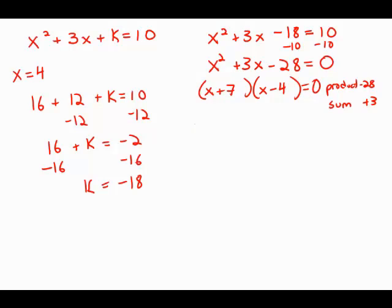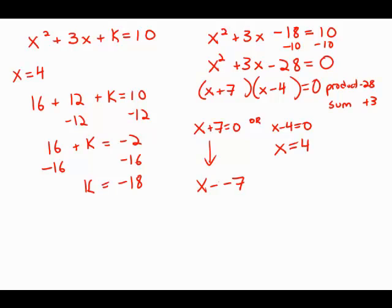So the two roots: x plus 7 equals 0, or x minus 4 equals 0. The second one gives the solution we already knew, x equals 4. The first one gives x equals negative 7, and this is answer choice A.